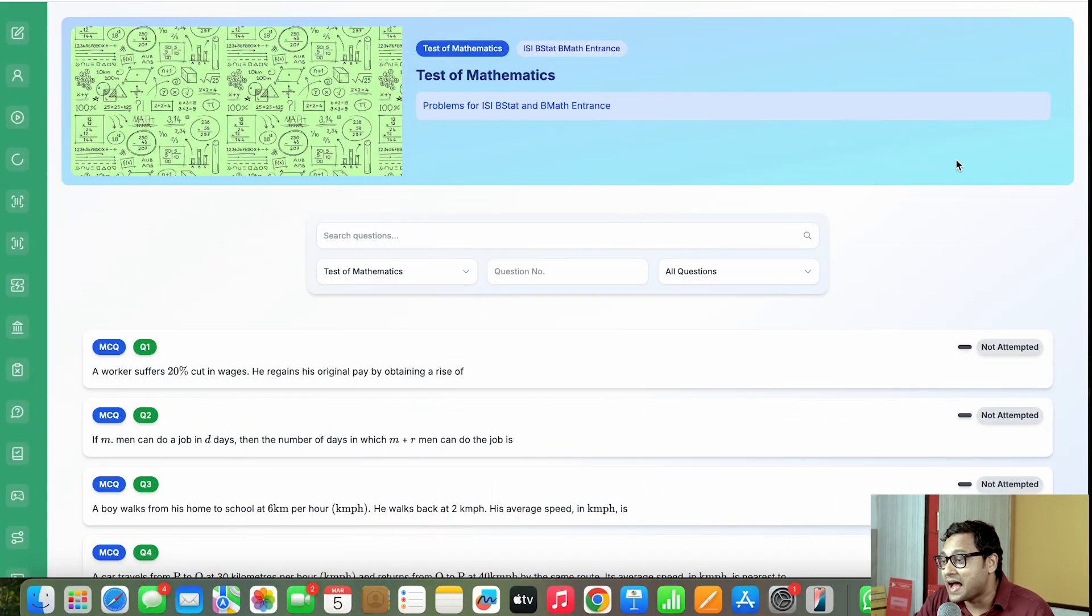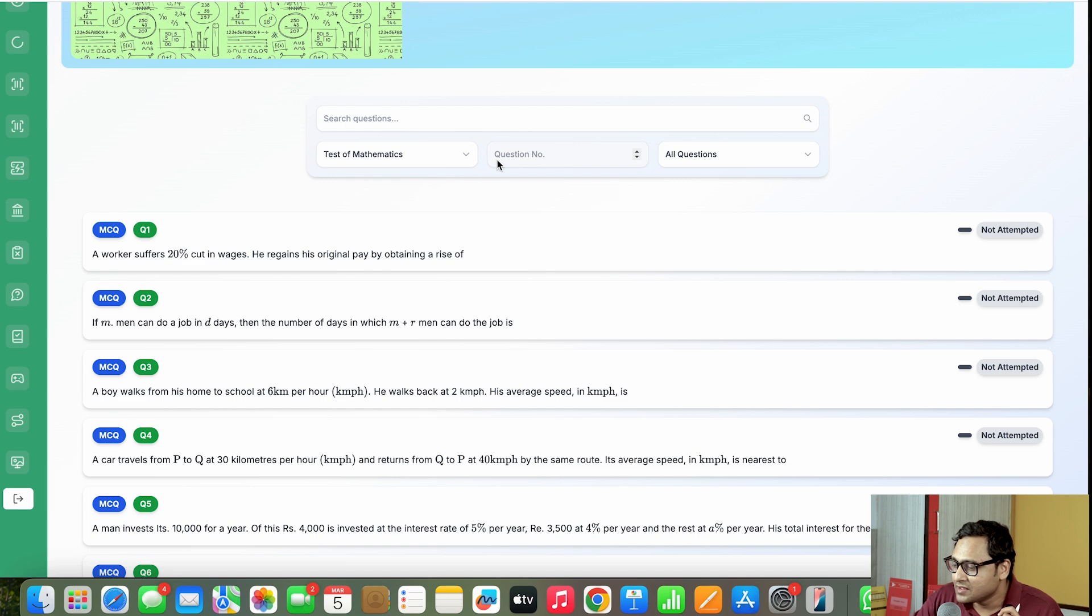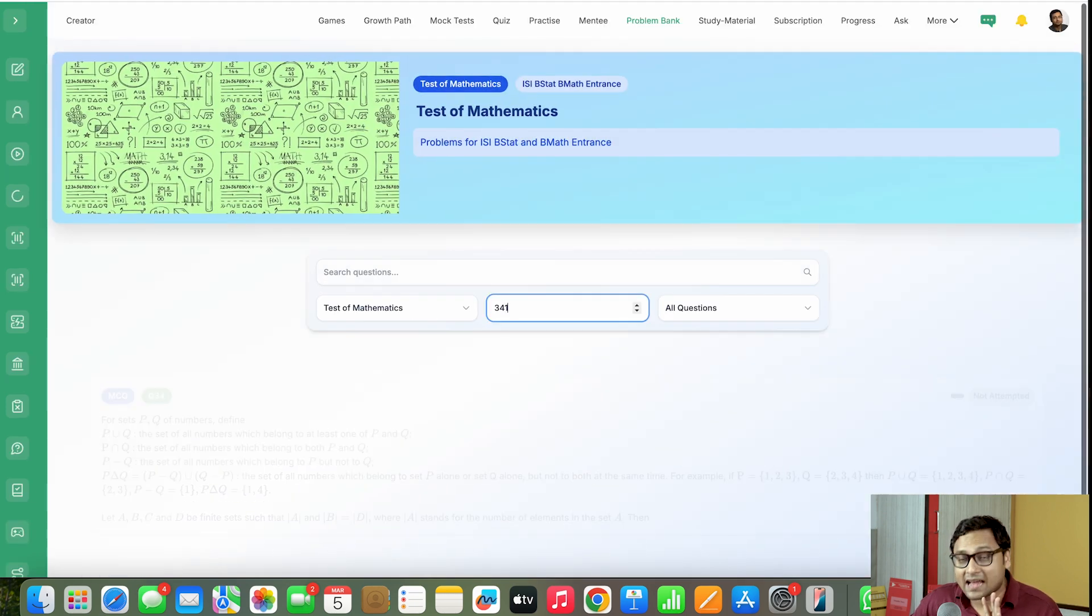This is known as the problem bank tool. It contains all the objective problems from the book Test of Mathematics at 10 plus 2 level. It's a very essential book published by EastWest Press. It contains the past problems from ISI, BSTAT and BMath entrances. So what we have done is that we wanted you to try the problems on your own, not look at solutions, but try the problems on your own, maybe with a hint. So let me show you what's going on. I will go to this particular portal and I'll type in problem number 341 because that's the problem that I want to try.